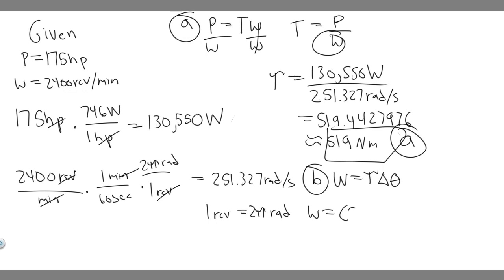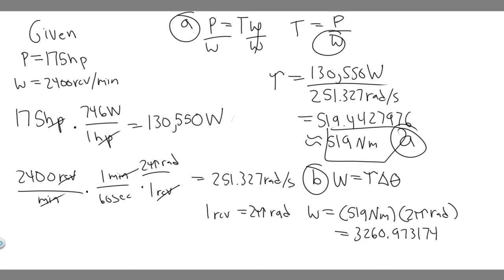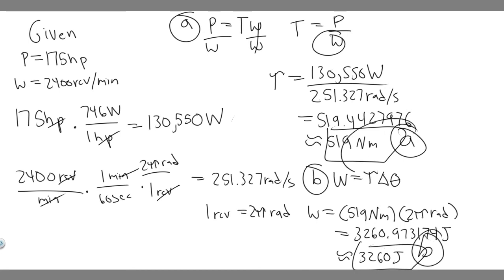So work equals the torque, which is 519 newton meters, multiplied by the change in angle theta, which is 2π radians. So 519 times 2π gives you 3,260.97... joules. You can round however you want — I'll just say 3,260 joules. So 3,260 joules is the amount of work the engine does in one revolution — that's your answer to Part B. Hopefully you found this useful.